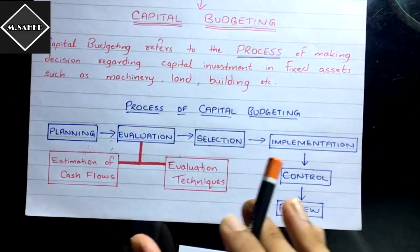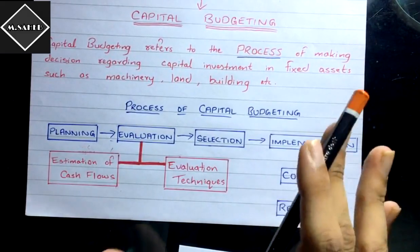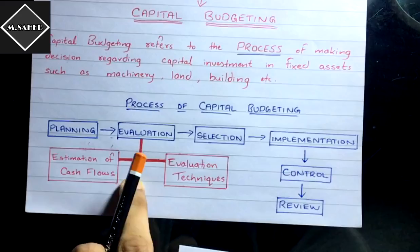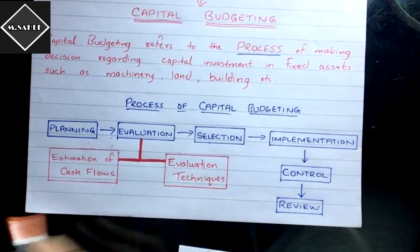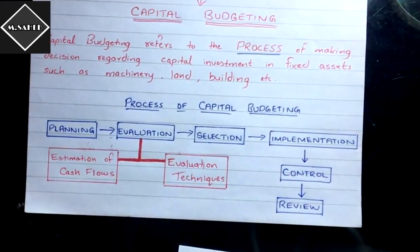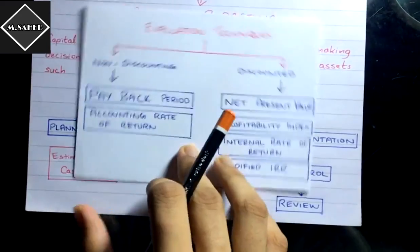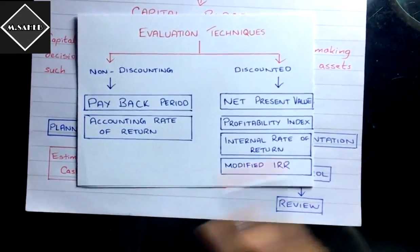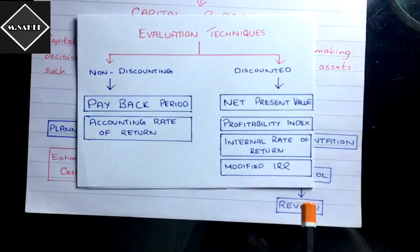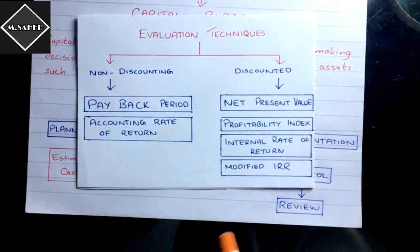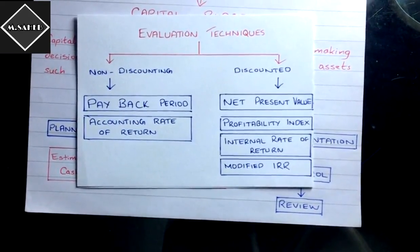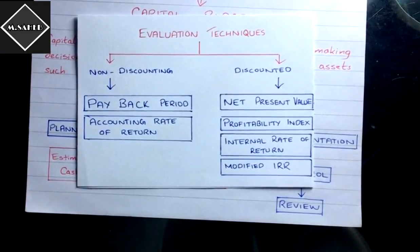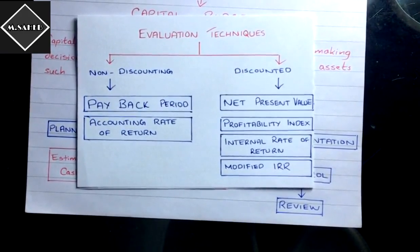So that was the process of capital budgeting. The main focus is on the evaluation stage and the evaluation techniques. In the coming videos, as I said, we are going to solve problems on payback period, accounting rate of return, and then cover each and every technique one by one. This was just a brief discussion about this chapter.